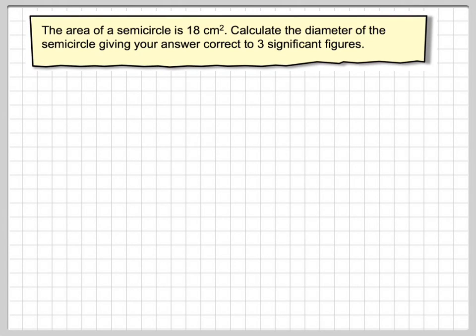Hi, this is a video about a semicircle. The area of a semicircle is 18cm squared. Calculate the diameter of the semicircle, giving your answer correct to three significant figures.